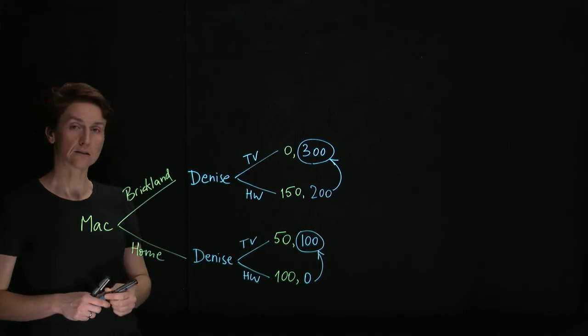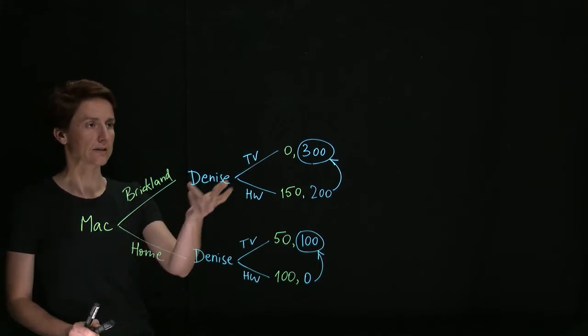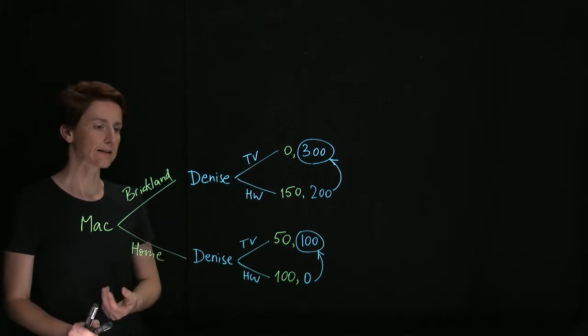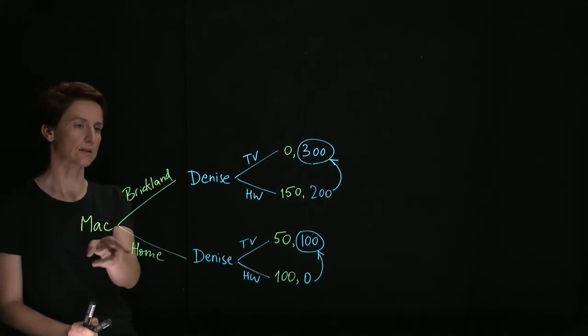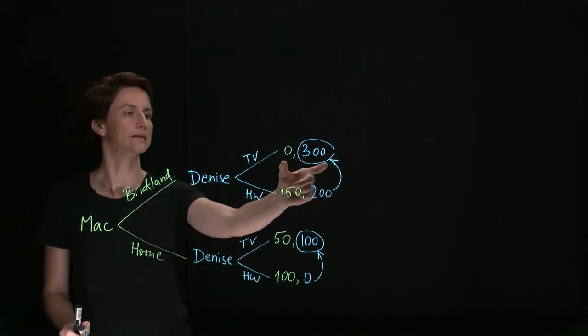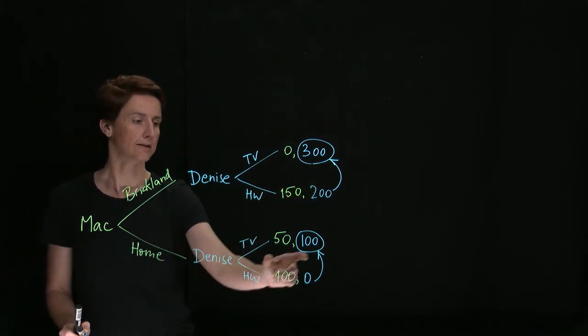So now as Mac, knowing Denise's payoffs in each case, he can anticipate what will happen. And so his actual choice then is between this outcome and this.